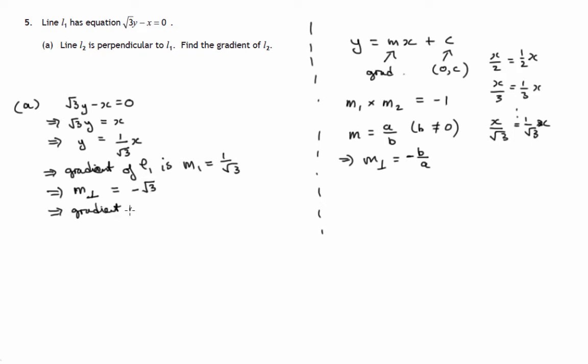So the gradient of L2 is, we can call it m2, is negative root 3. And these two multiplied together will give you negative 1. So that's the answer to part A. Let's move on to part B.